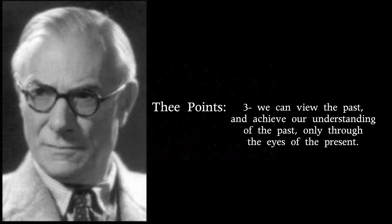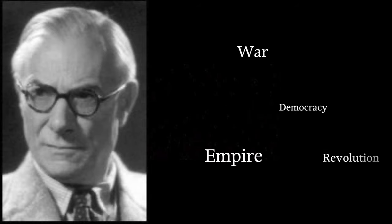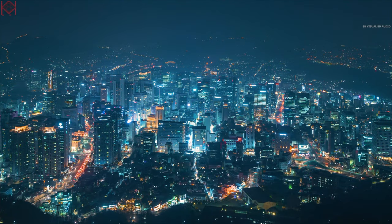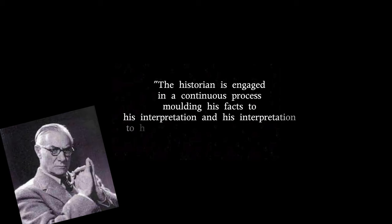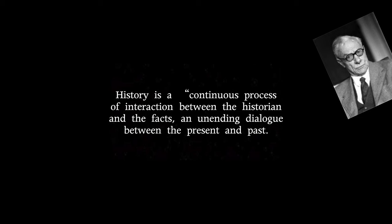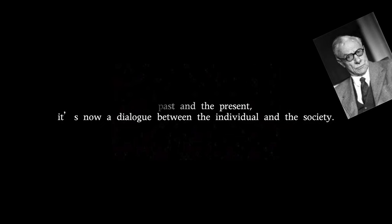The third point is that we can view the past only through the eyes of the present. The very words a historian uses — democracy, empire, war, revolution — carry current connotations he cannot divorce himself from, meaning a 16th-century historian and a 21st-century historian would interpret the same event very differently. This led Carr to the idea of total skepticism: how can anything be right if there are different views at different times? Carr asserts that the historian is engaged in a continuous process of molding his facts to interpretation and his interpretation to his facts, making it impossible to assign primacy to one over the other. He concludes that history is a continuous process of interaction between the historian and the facts — an unending dialogue between the present and the past — and also a dialogue between the individual and the society, which leads to the next section.